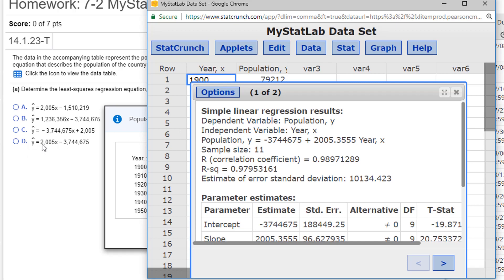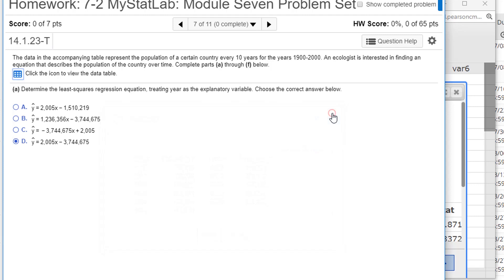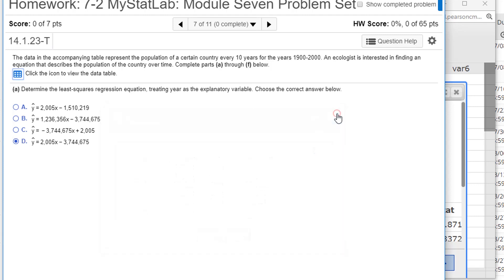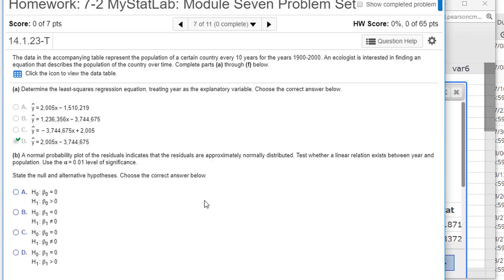So you can see that corresponds with option D. That's the one. We have a coefficient of 2005 for x and the intercept, which has no variable next to it, is the negative 3744675. So there's my answer. Let's close that. Good job, continue.